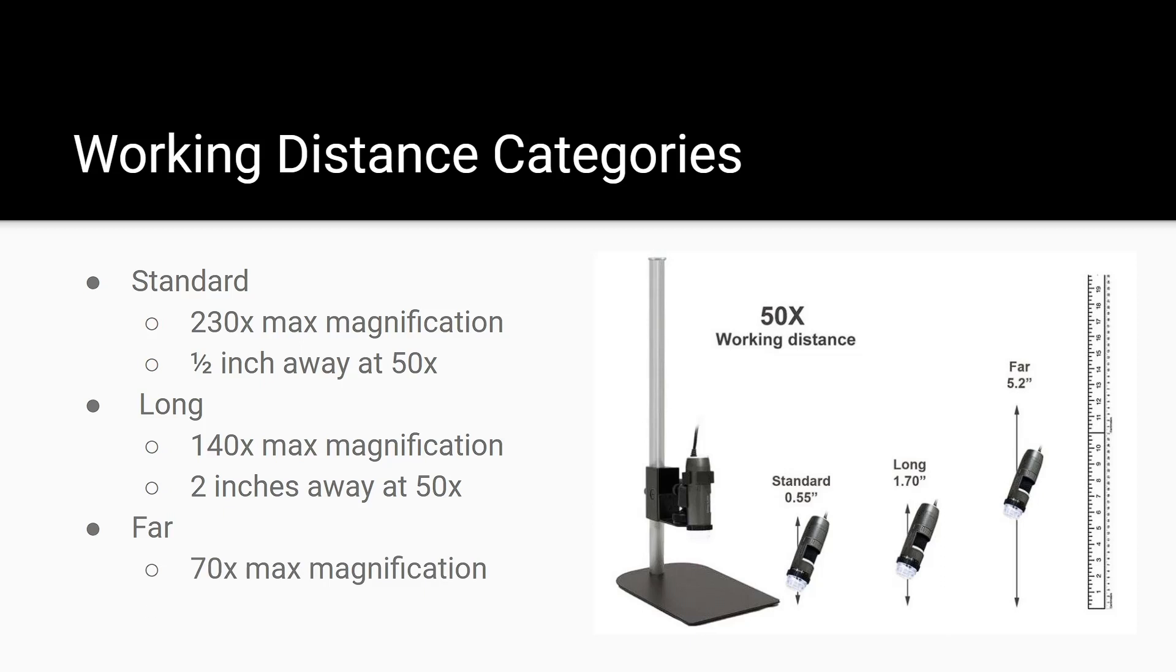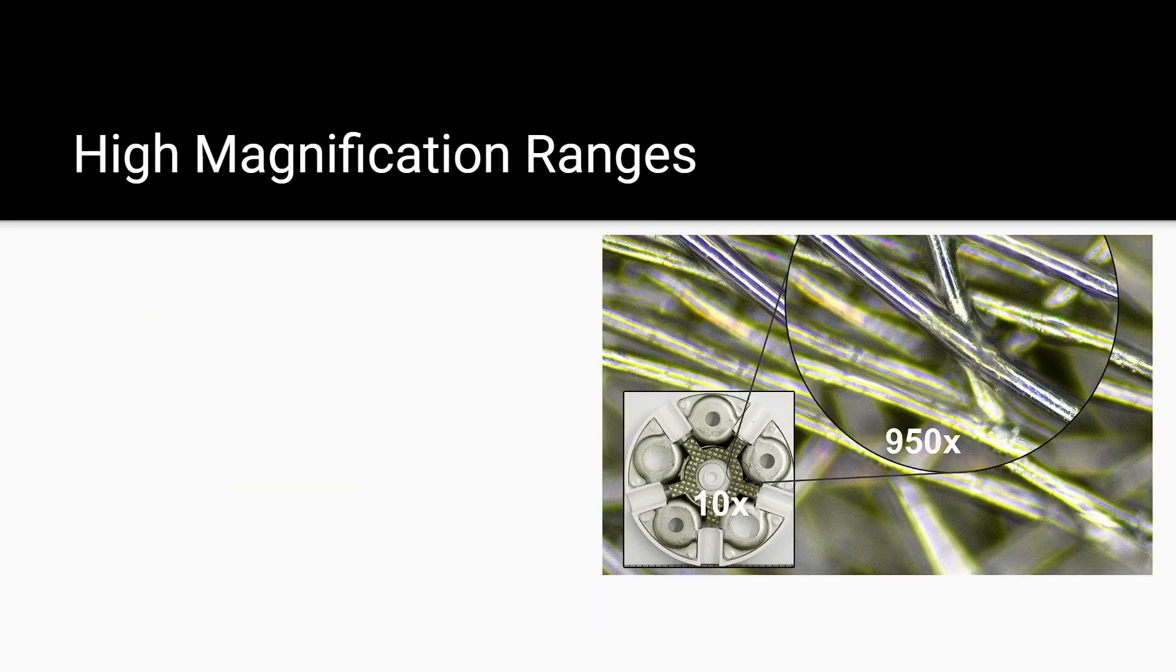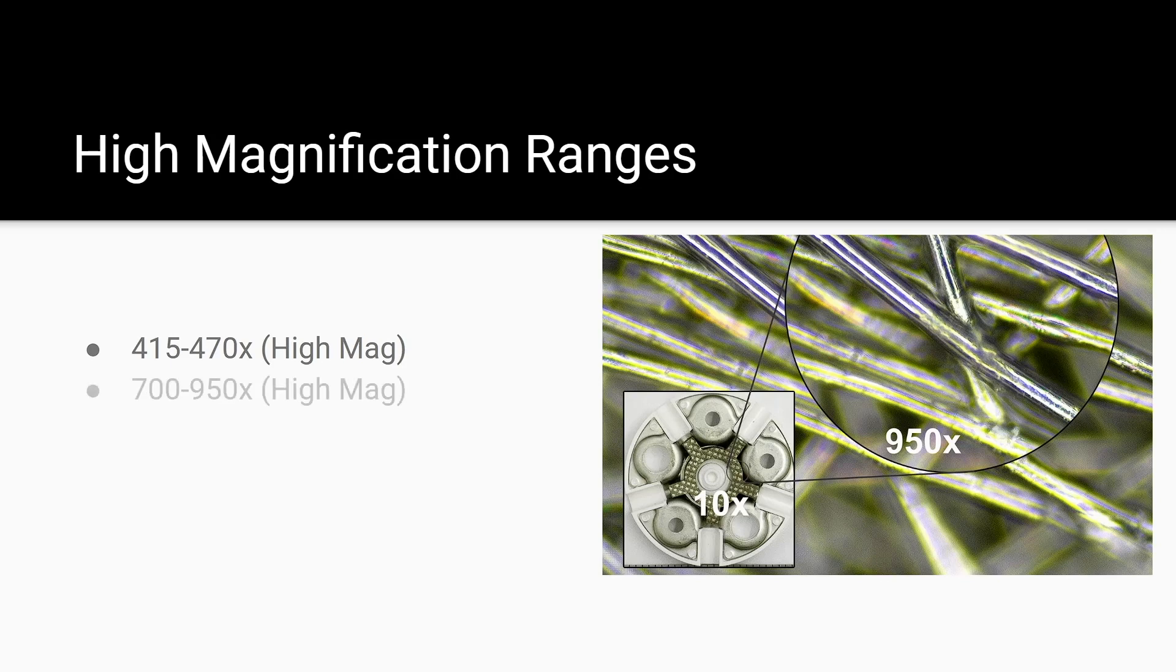So, as you can see, as you move to the longer working distance models, you lose maximum magnification, but you can achieve a higher magnification at a distance. If you require higher magnification, we have microscopes with a magnification range of 415 times to 470 times, and our highest magnification models have a magnification range of 700 to 950 times.